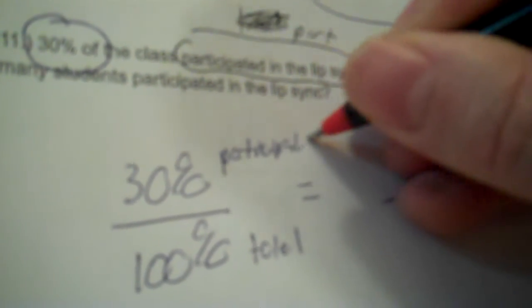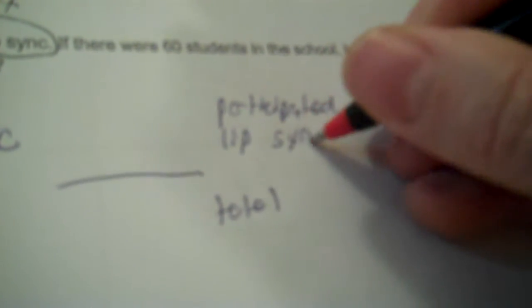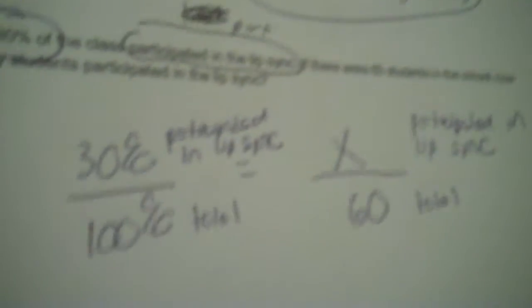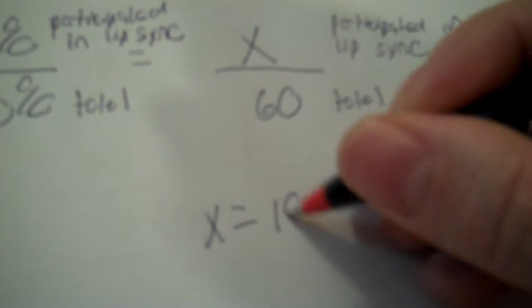Now 30% of the class participated in the lip sync. If there were 60 students in the school, how many students participated in the lip sync? Now circle your percent. If it says of after it, you're going to put 30% over 100%, and it's going to be a problem like this. Like the top. It's just a percent over 100 instead of a fraction. So total, and then participated in the lip sync. How many students participated in the lip sync? We don't know that. That's what they're asking me to find. So that's X, so the 60 is your total this time. So 30 times 60 is equal to 100 times X. So you got 18. 18 students.